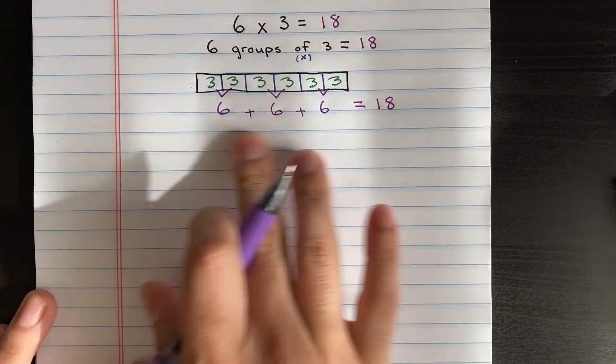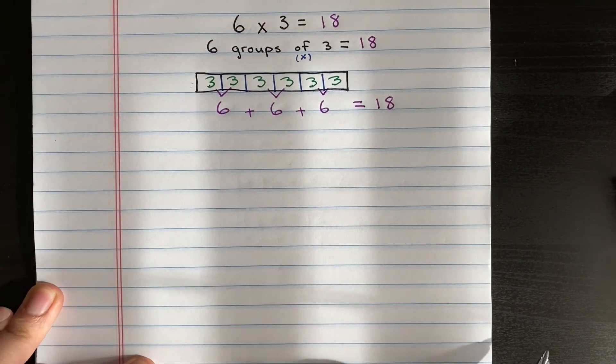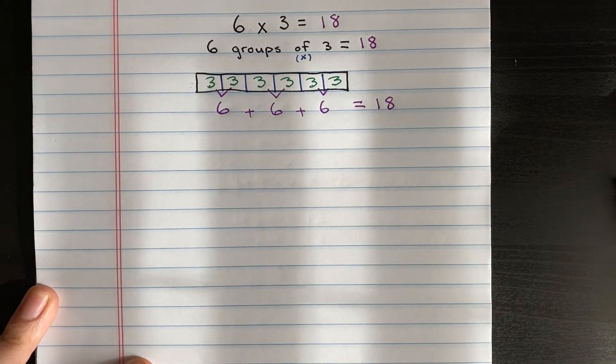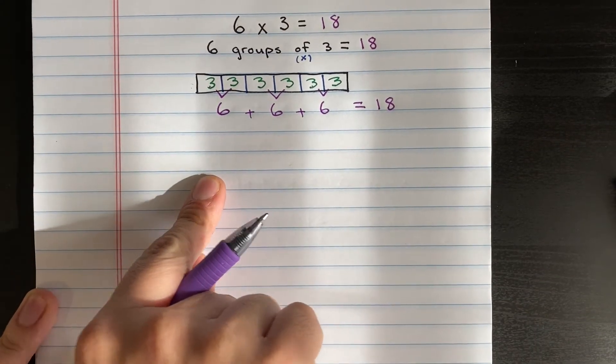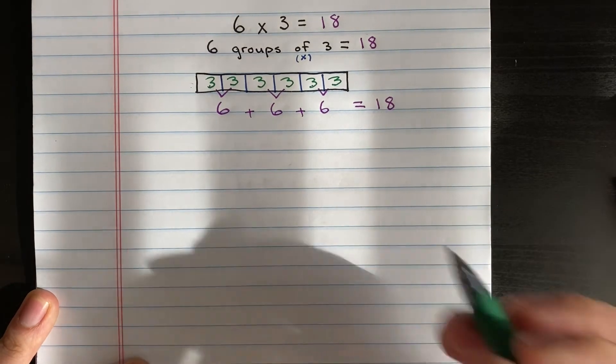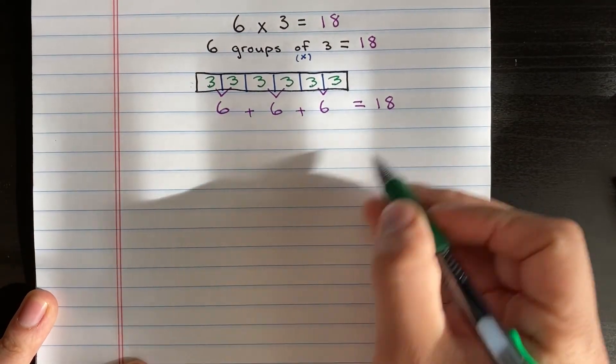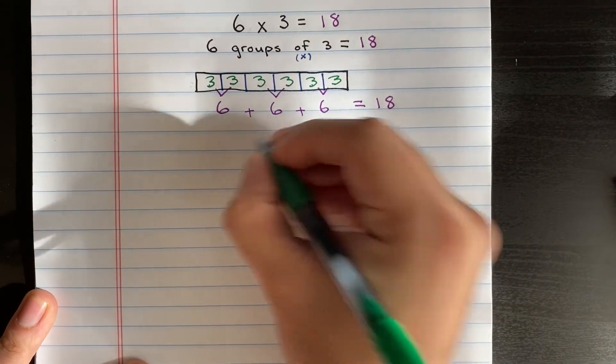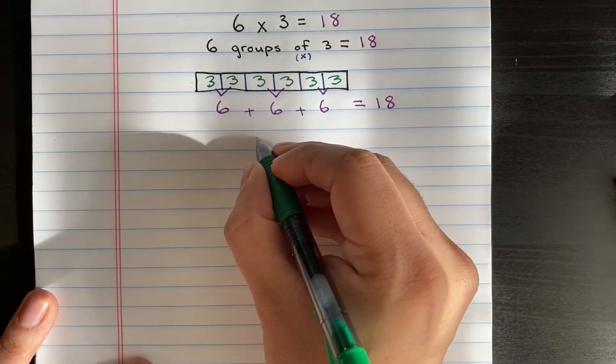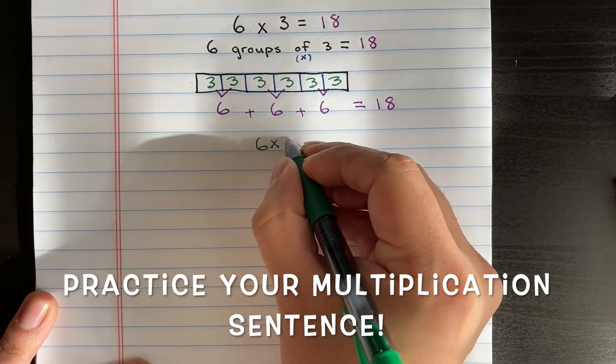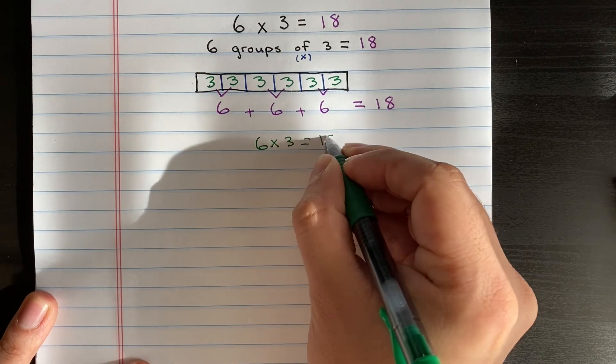And there is how to multiply using the tape diagram strategy. But we're not done. I also like to tell my students that yes, you have a repeated addition sentence, but you need to practice your multiplication sentence. So let's go ahead and practice. So our answer: 6 × 3 = 18.